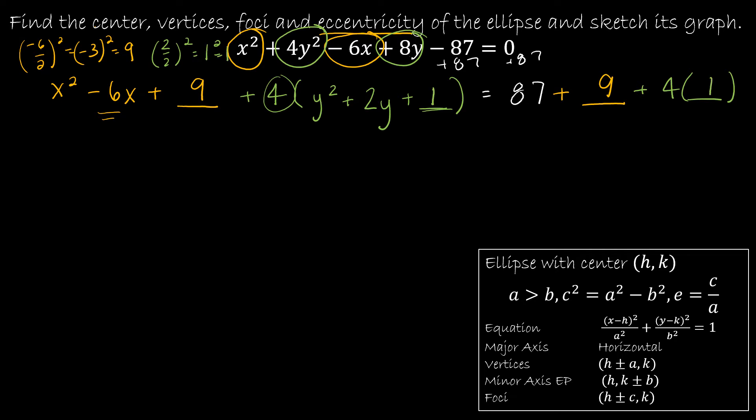That goes in both places. And then for the y value, I'm going to take 2 divided by 2 squared, which is 1 squared, which is 1. And that goes here and here. So on the left side of my equation, x squared minus 6x plus 9 is now a perfect square. And I have x minus 3 quantity squared. For my y values, I've got a 4 on the outside. And then this is y plus 1 quantity squared. And then on the right side of my equation, I have to combine 87 and 9, which is 96 plus 4, which is 100.